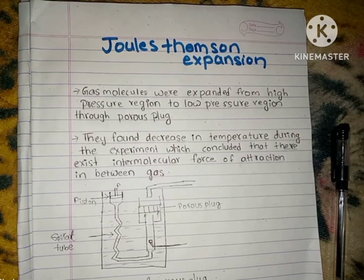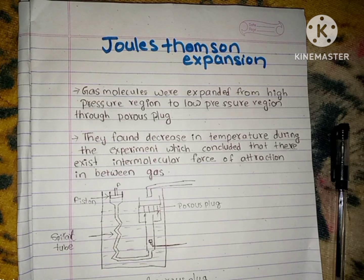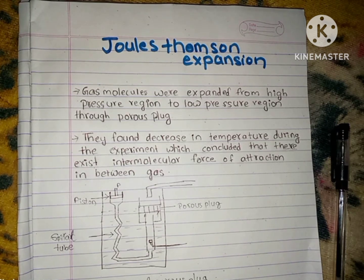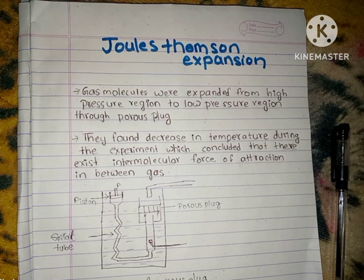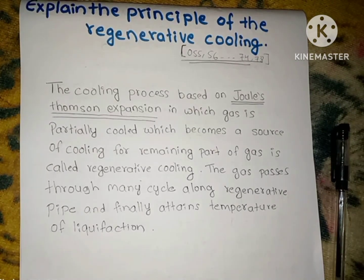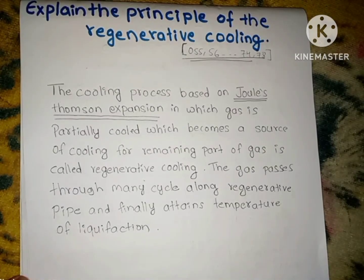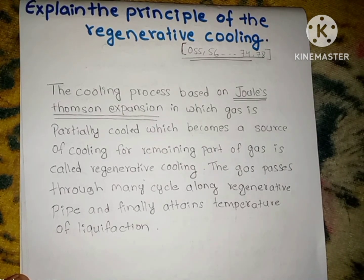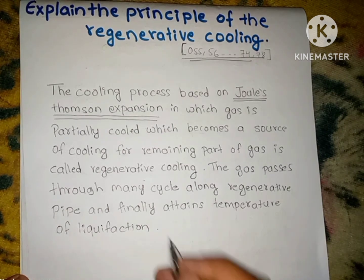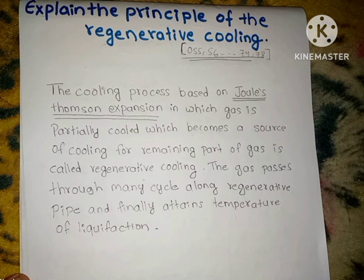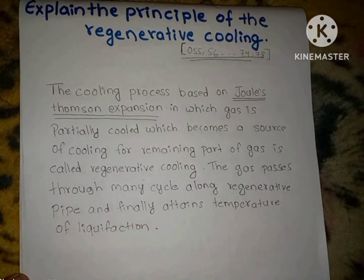In this process, the gas undergoes throttling at low pressure, then the gas slows down and the temperature decreases. This shows there is an intermolecular force of attraction in the gas. The gas passes through many cycles along the regenerative pipe and finally attains the temperature of liquefaction.